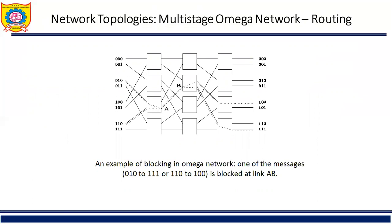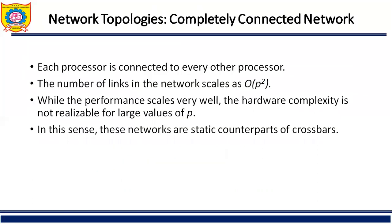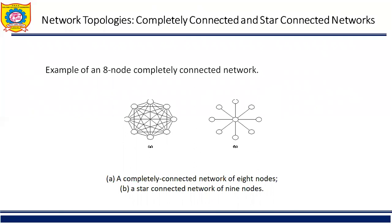An example of blocking in the omega network is shown here, where messages 010→111 and 110→100 are blocked at links A and B. Another type is the completely connected network, where each processor is connected to every other processor. The number of links scales as O(P²). While performance scales very well, the hardware complexity is not feasible for large values of P — these networks are the static counterparts of the crossbar switch. Figure A shows a completely connected network of 8 nodes.